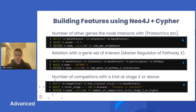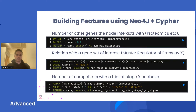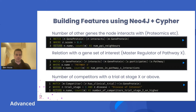There are often other considerations beyond just biology. This last query shows a commercial feature — looking at the number of competitors with a trial at stage X or above. For example, you may want to understand if a competitor is already looking at a target for that disease. If they're at clinical trial stage two or above, you may want to avoid that target and look for something more novel.